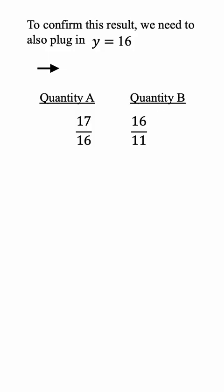By plugging it in, we have 17 over 16 for quantity A and we have 16 over 11 for quantity B. Again, for this case, the numerator for quantity B is much larger than the denominator.